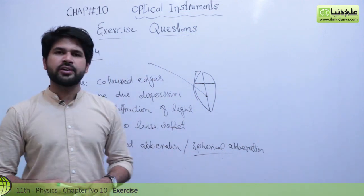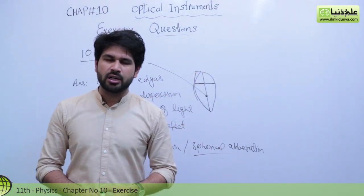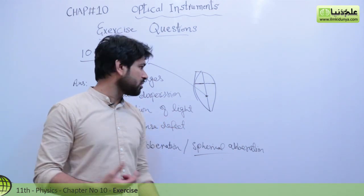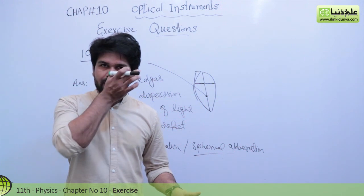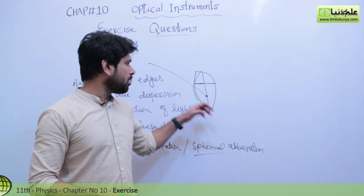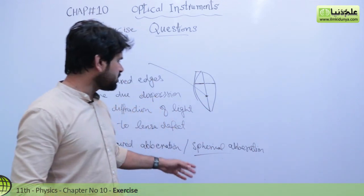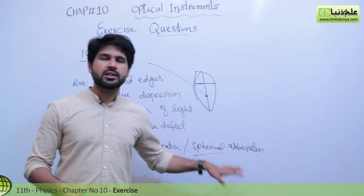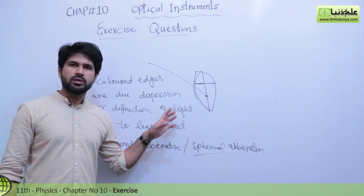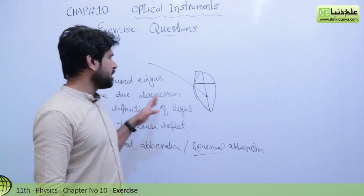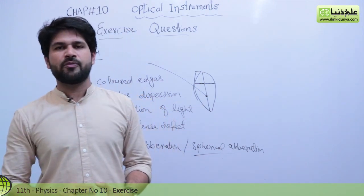This is due to the spherical aberration. The lens is a part of a sphere — a biconvex lens or spherical glass of a spherical shape. Due to the spherical aberration, colored edges appear due to the defect of the lens, caused by the diffraction or dispersion of light through the lens. So this is a quite feasible answer.